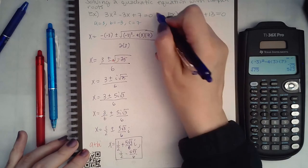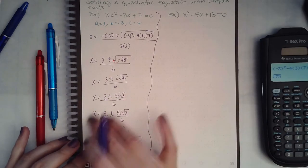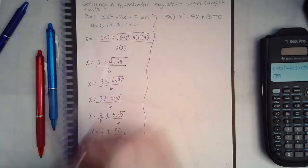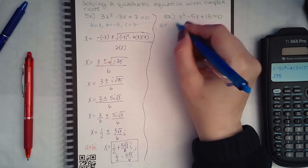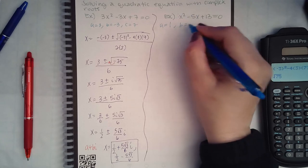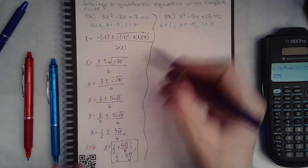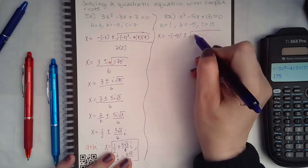Now let's try the same thing with another problem. So a is hidden, it's one, b is negative five, and c is positive 13, so we plug it all into the formula.